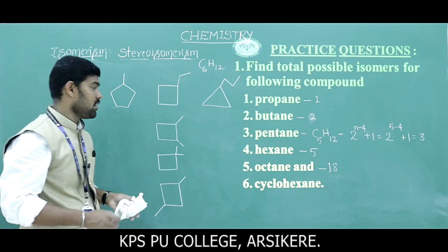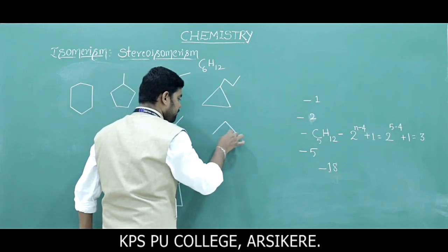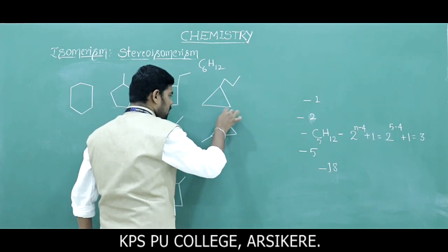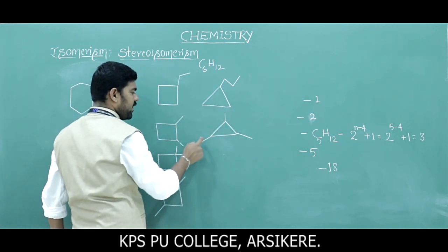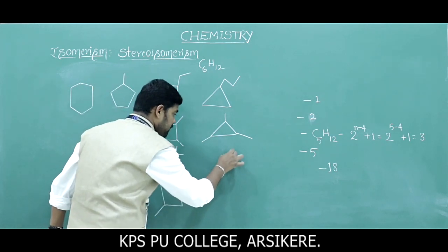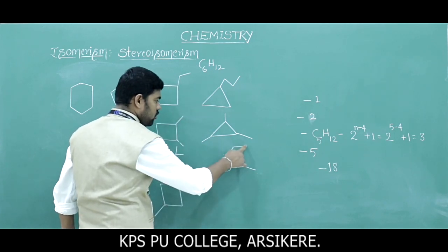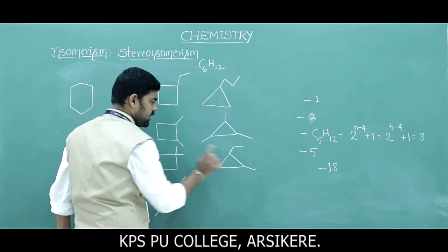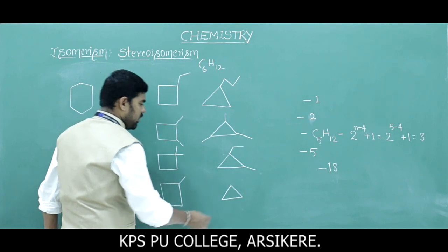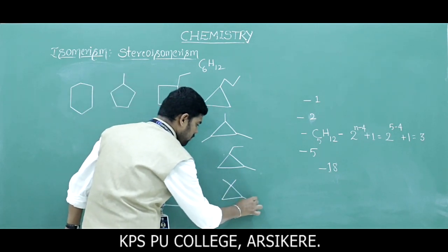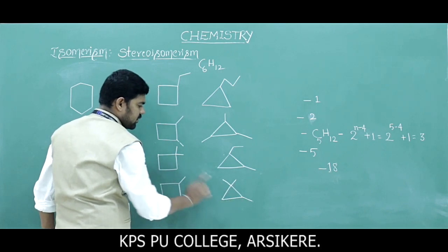Now look at the structures more carefully. Each structure can be written in different ways, and we count: 1, 2, 3, 4, 5, 6 carbon atoms in each case. One structure is drawn as 1, 2, 3, 4, 5, 6 carbon atoms. Another form can also be written — again 6 carbon atoms confirmed. A further form gives 6 carbon atoms with 12 hydrogens.